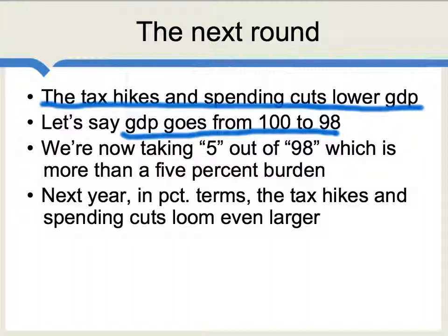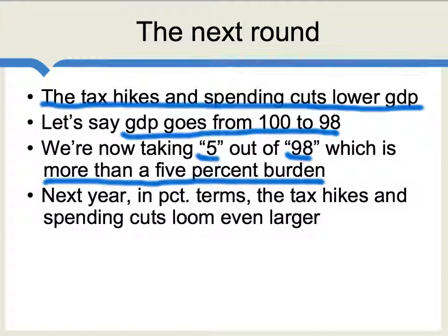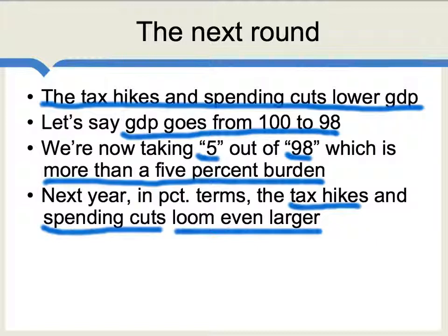Taking 100 billion as the initial GDP, we are now taking 5 for debt service out of 98, rather than taking 5 out of 100 as the year before. That is now more than a 5% burden. So the relative burden in percentage terms of the added debt service is increasing in importance. Next year in percentage terms, that mix of tax hikes and spending cuts which we had decided upon will loom even larger — and it's going to get even worse yet.